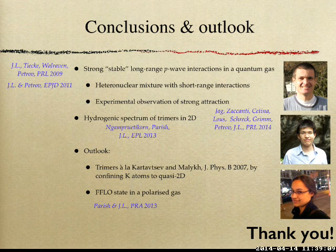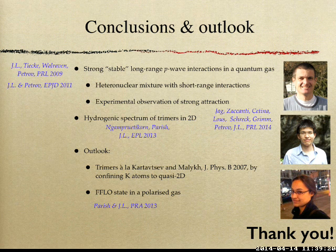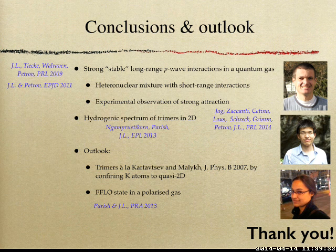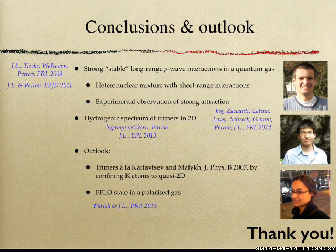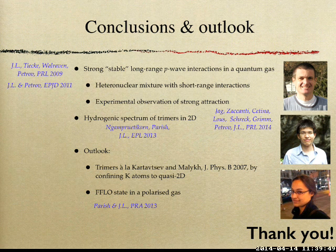In conclusion, I've described how you can get strong, stable, long-range P-wave interactions in a quantum gas and how this has been observed in experiment. I've described the emergence of a hydrogenic spectrum at large mass ratio in 2D. The outlook is definitely to try and get these trimers. I thank my theory collaborators Dmitry Petrov, Mira Parish, and Mira's student, and thank you for your attention.